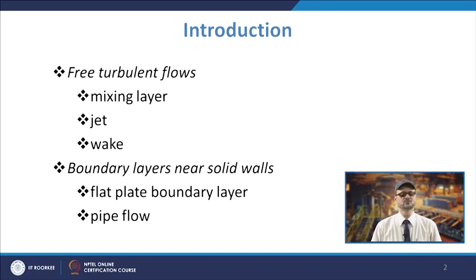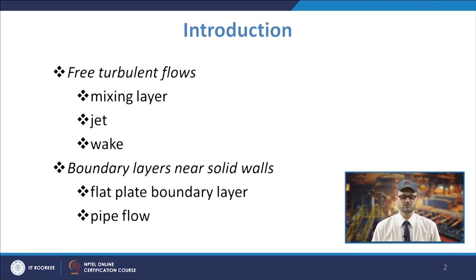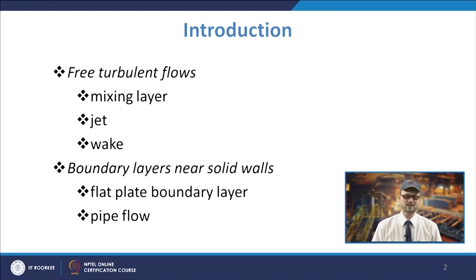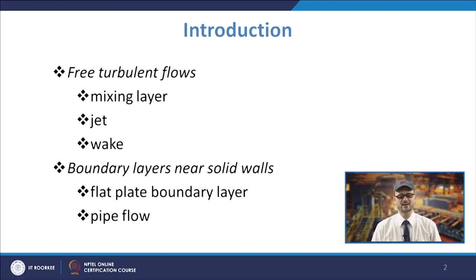We will talk initially about some examples of turbulent flows, especially with constant imposed pressure. These examples include free turbulent flow — such as a mixing layer, jet, or wake. These are examples of free turbulent flows. If you talk about boundary layers near solid walls, you may have the flat plate boundary layer or pipe flow, which come under the category of boundary layers near solid walls.